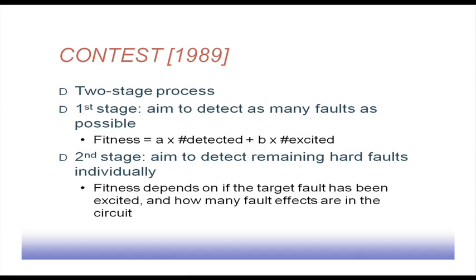The second stage targets only the hard faults — it targets one fault and tries to generate individuals in that direction. Whether the target fault has been excited and how many fault effects have been excited by that pattern determines the fitness of the individual.